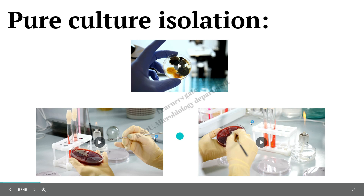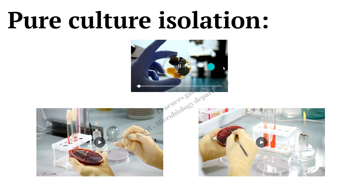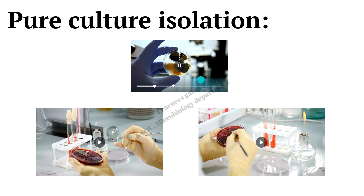The first technique is pure culture isolation. Once you do serialization from different samples such as soil, liquid sample, etc., you get different colonies. Here you can see in this video you can get different colonies. These different colonies we need to segregate them in the form of a pure culture.